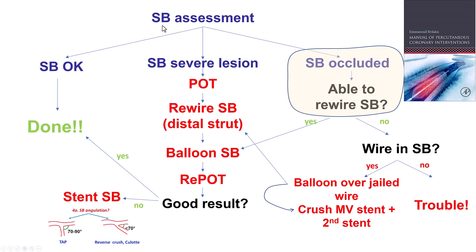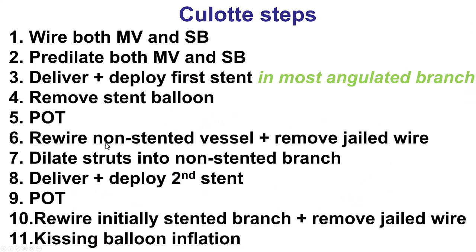The diagonal looked worse, so we decided we should probably place a second stent. In this situation — a side branch with a severe lesion after bifurcation stenting of the main vessel — the next step is POT, which we did with a 3.5 mm balloon, then rewiring the side branch. It still looked significantly stenosed, so we proceeded with stenting the side branch. Different techniques can be used: TAP, T and protrusion, reverse crush, or culotte for angles less than 70 degrees. In our case, the angulation of the diagonal was less than 70 degrees with similar size of the diagonal and the LAD, so we decided to go with the culotte technique.